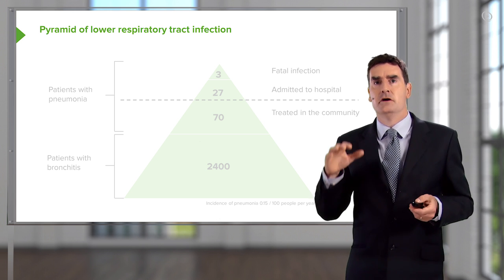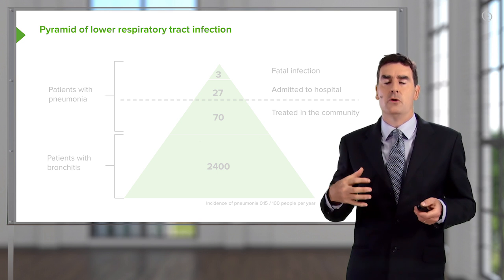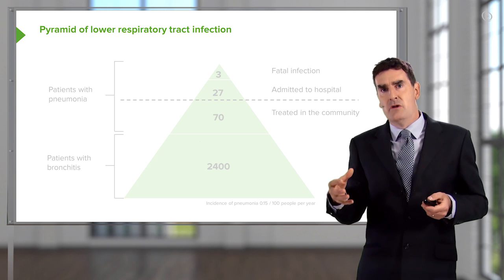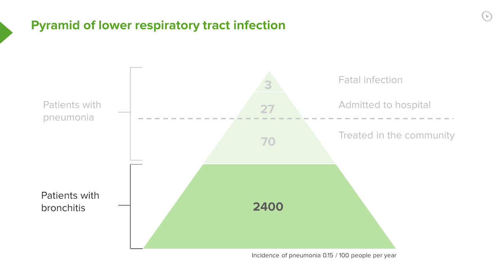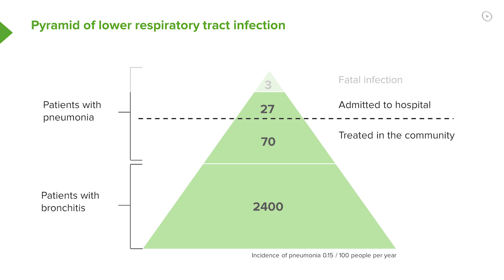In lower respiratory tract infections — those below the larynx affecting the trachea, bronchi, or alveoli — most patients will have tracheobronchitis. Only a small portion go on to develop the more serious form, pneumonia. Of those with pneumonia, about 70% can be treated successfully in the community without hospitalization, as most cases are relatively mild. However, in some people it is more severe, and they end up in hospital, potentially in intensive care. Overall, approximately three out of every 100 people with pneumonia will die.